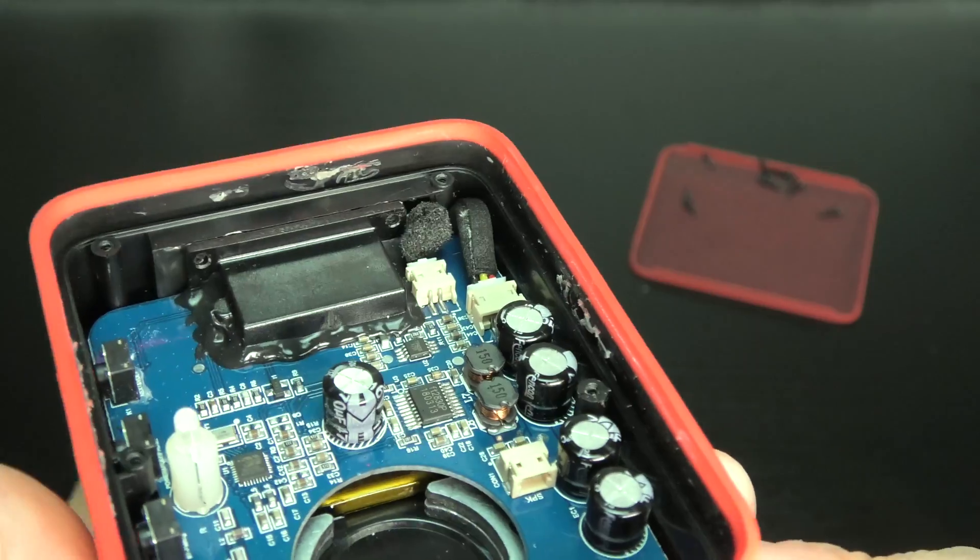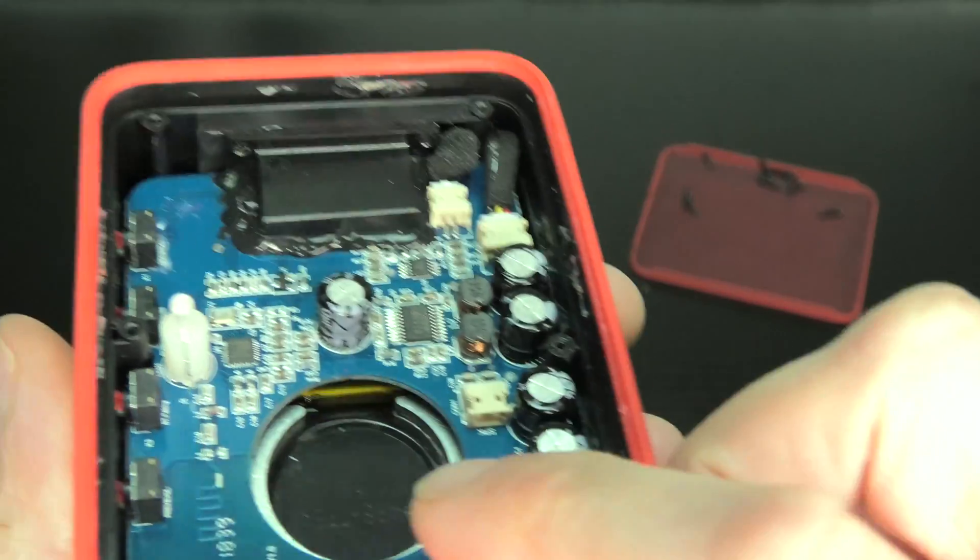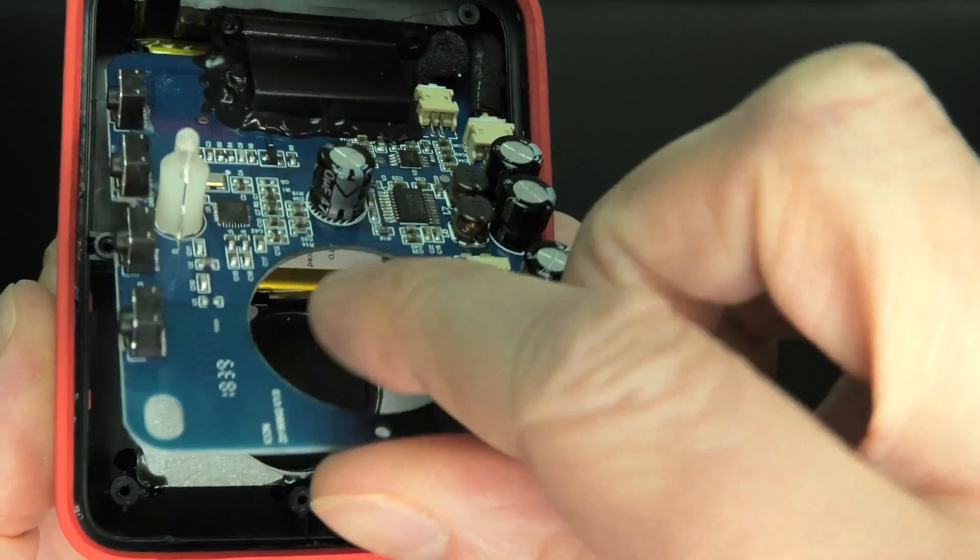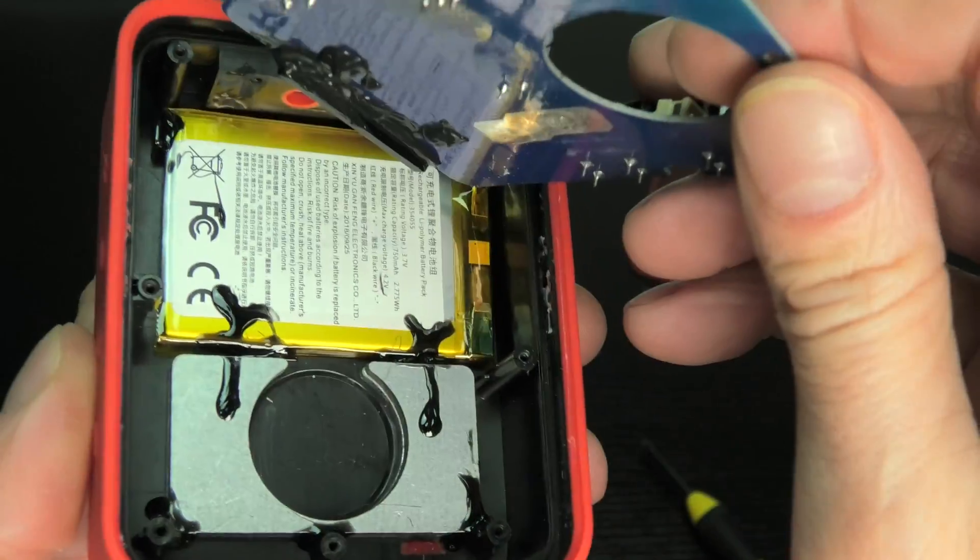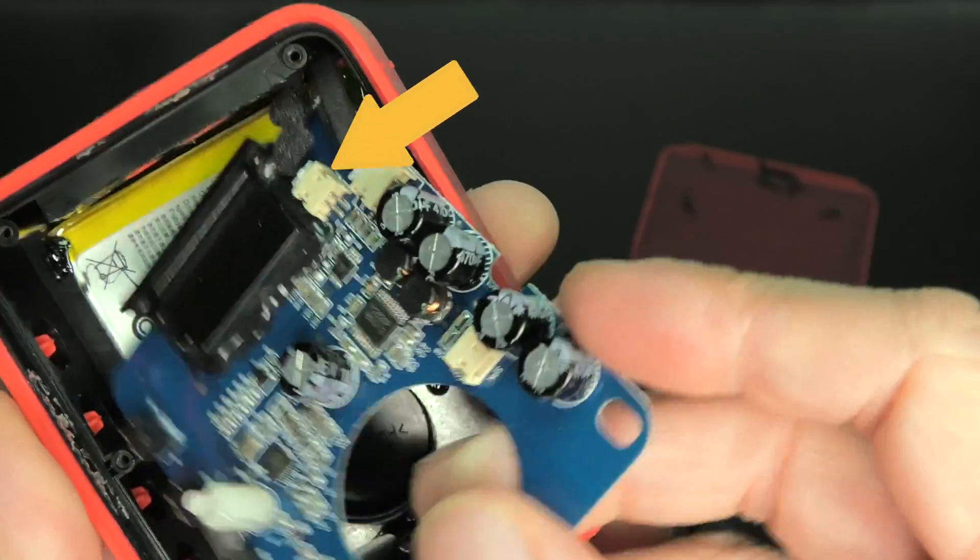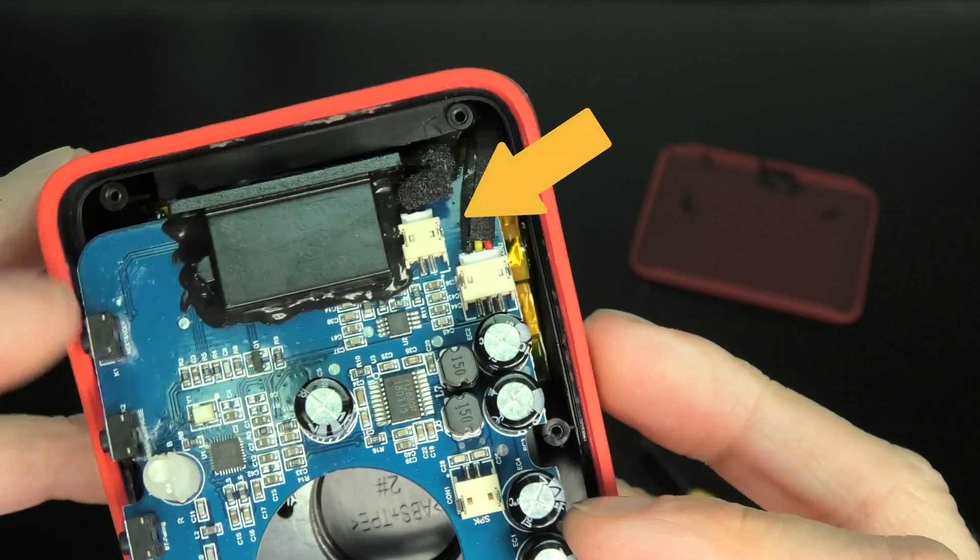Okay and now that we've removed those screws we can finally take out the board here. So you just lift it out. But you have to be careful, there's two more connectors here. One goes to the microphone here, follow the arrow, that's where they are.